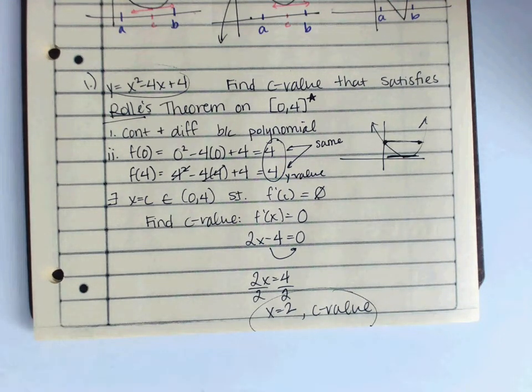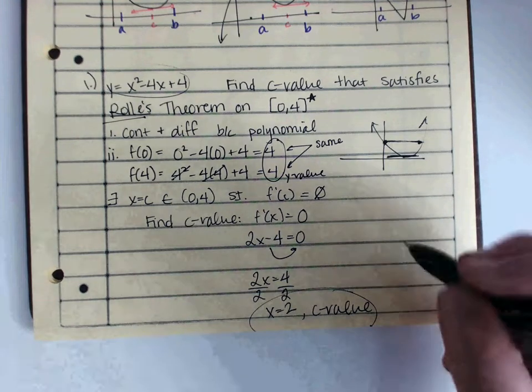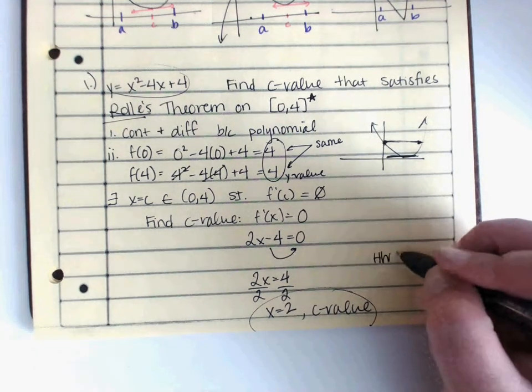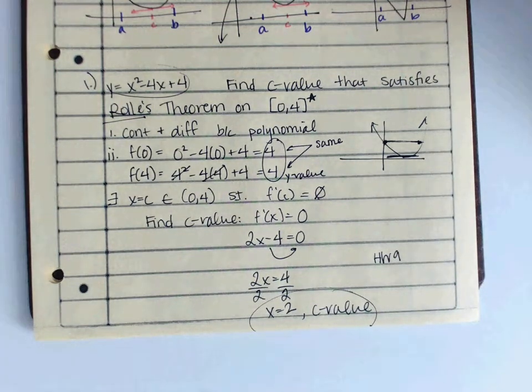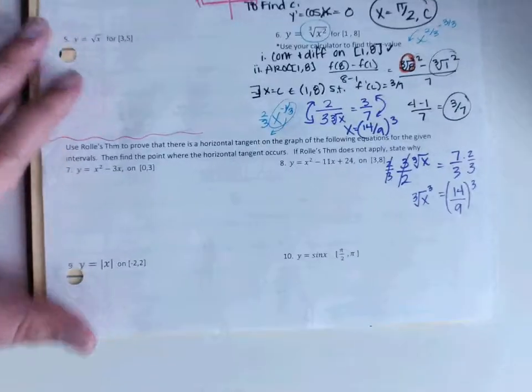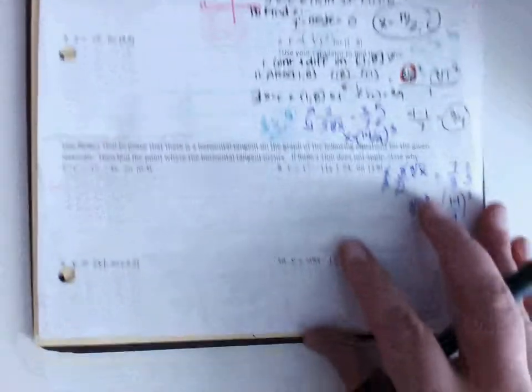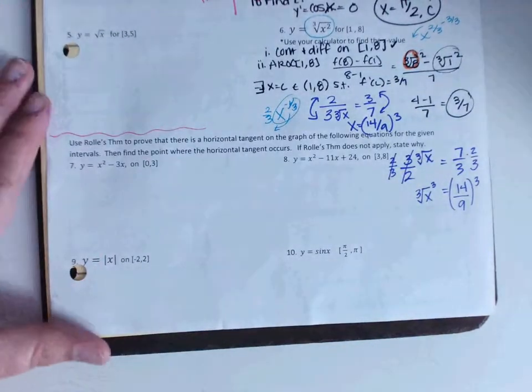All righty. So the other example that we're going to work is going to be off of homework 9. So if you'll get out homework 9, we're going to do the bottom little section. So take a look at your homework 9 right here. First one we're going to do is number 7.